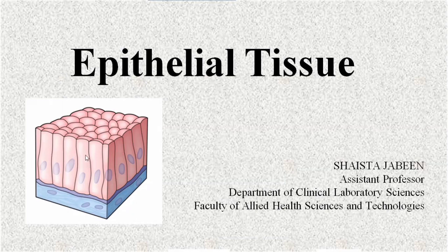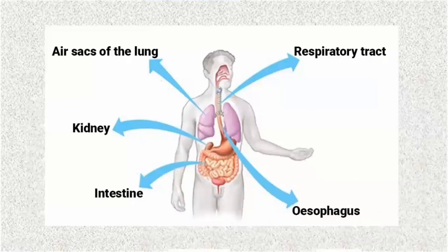According to the structure of the epithelial tissue, they perform specific functions. As epithelial tissues form a thin lining, they are involved in providing boundaries and covering to the body surfaces. It provides the outermost covering to the body and also provides the lining to the internal organs of the body.